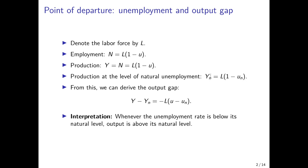We can rewrite this for the natural level of output with the natural level of unemployment. This natural level of output is also often interpreted as the potential output level of an economy. From this we can derive the output gap, which is actual output minus natural output. This is equal to the negative of the deviation of the current unemployment rate from the natural unemployment rate, giving us an expression for the output gap in terms of that deviation.